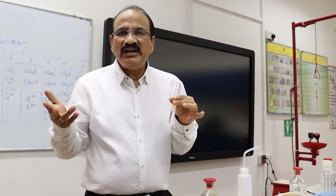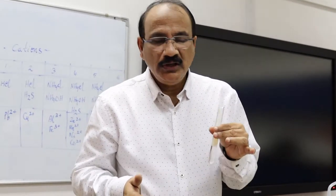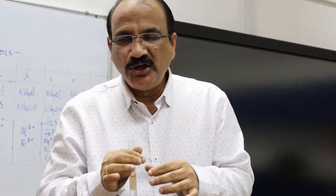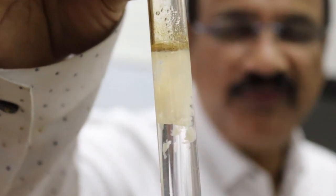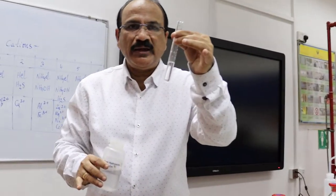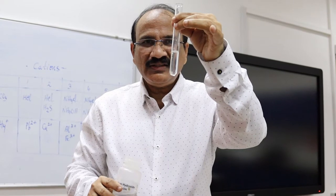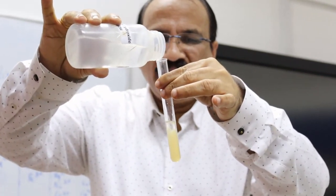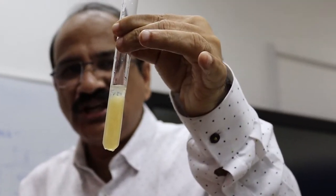Yet another cation in the fourth group is Mn2+. For its identification, we add the group reagents — ammonium chloride, ammonium hydroxide, and hydrogen sulfide — and we obtain a flesh-colored precipitate, which indicates the presence of Mn2+. For the confirmatory test, we add sodium hydroxide in drops and observe the white precipitate gradually changing into light brown.